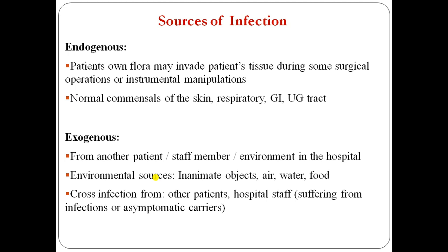The second source is exogenous. Exogenous means the disease originates outside the body. During some surgical operations or instrumental manipulation, exogenous infection can occur. Endogenous comes from your own flora, but exogenous originates outside the body — for example, from chemical agents, trauma, another patient, a staff member, or the hospital environment.